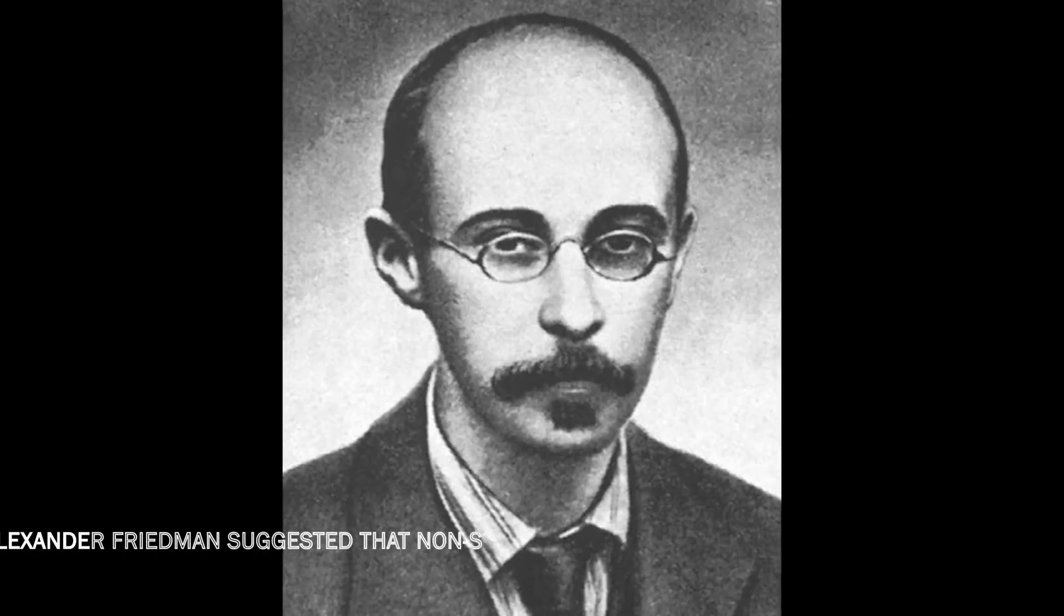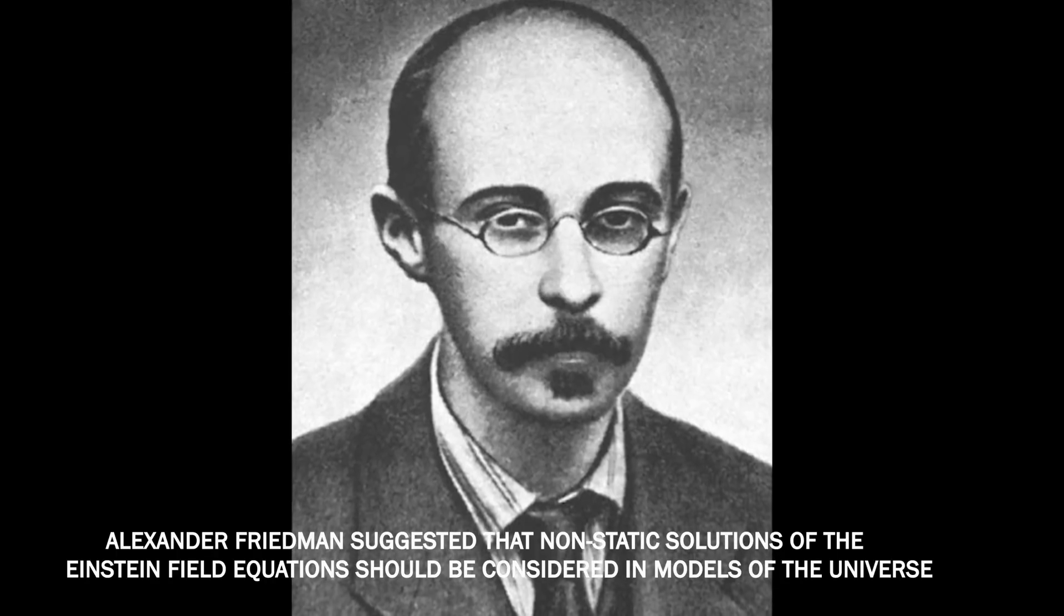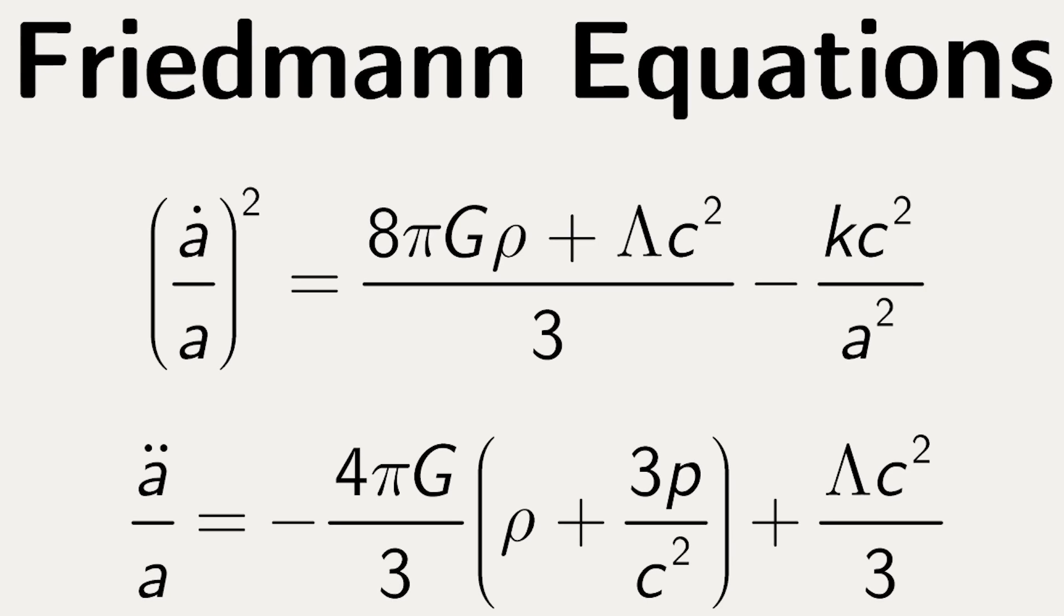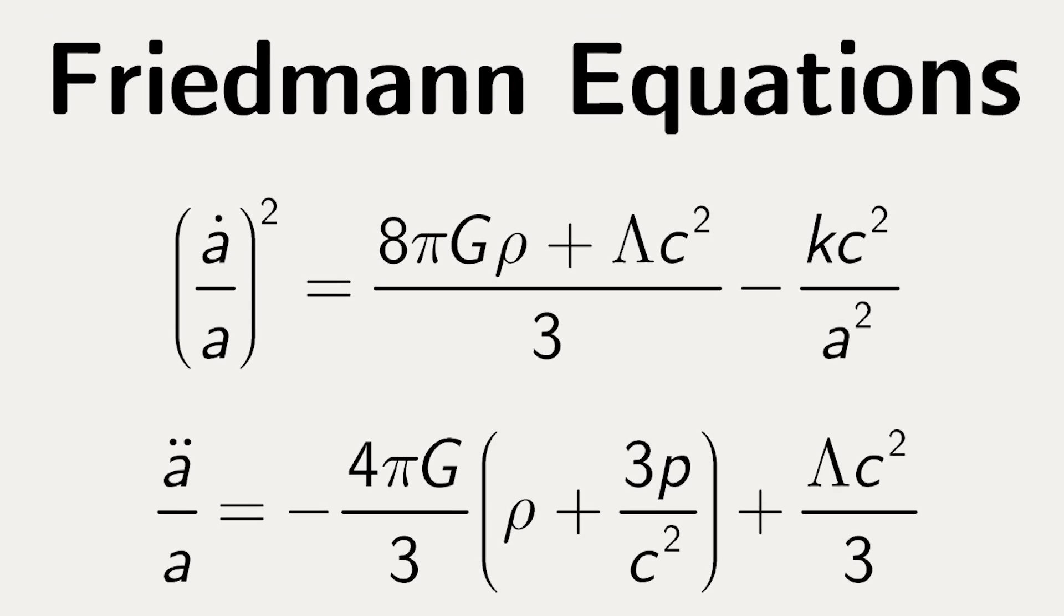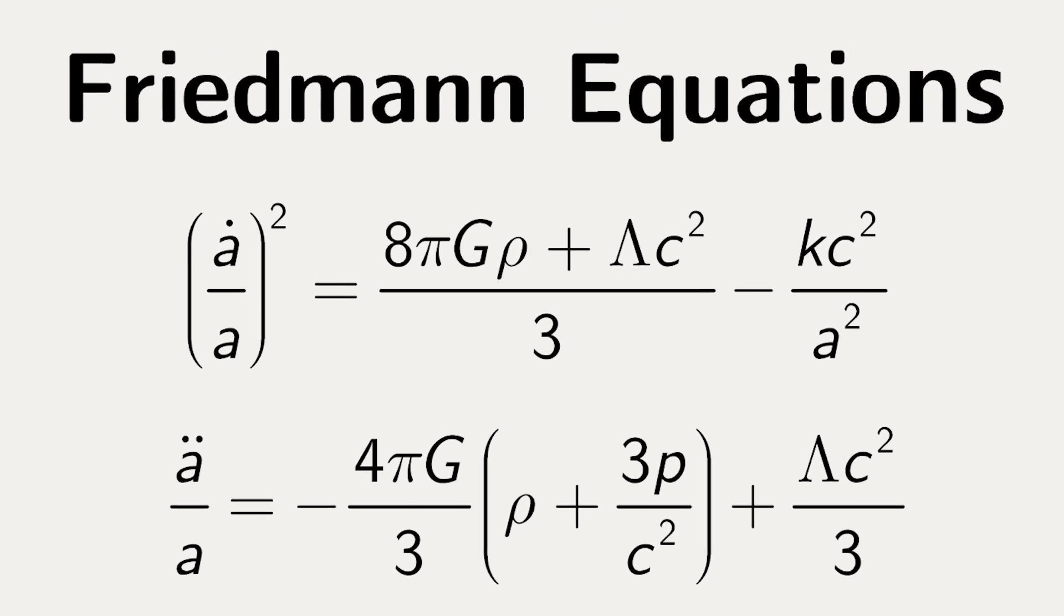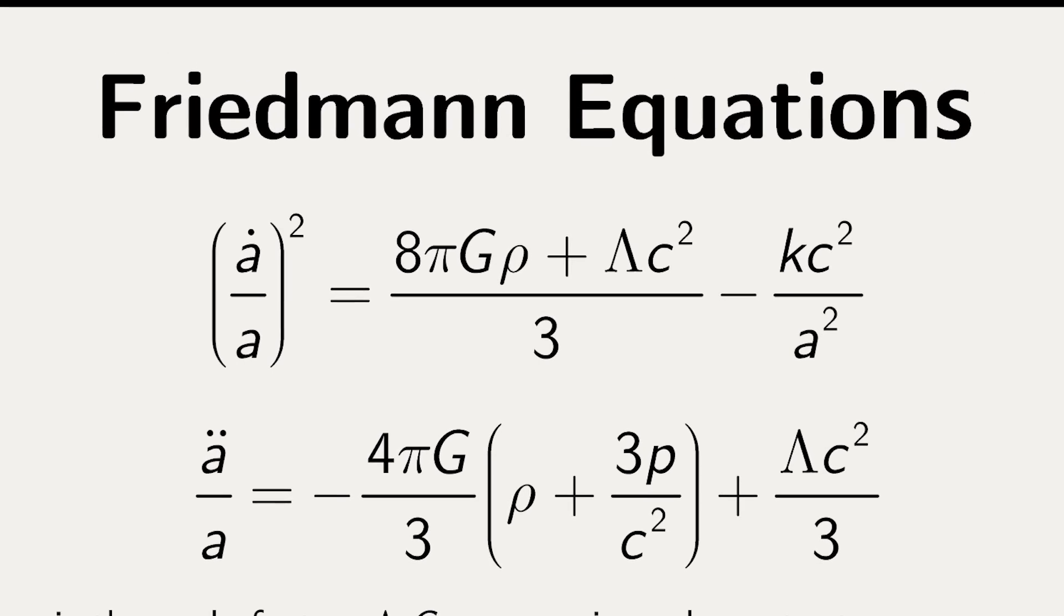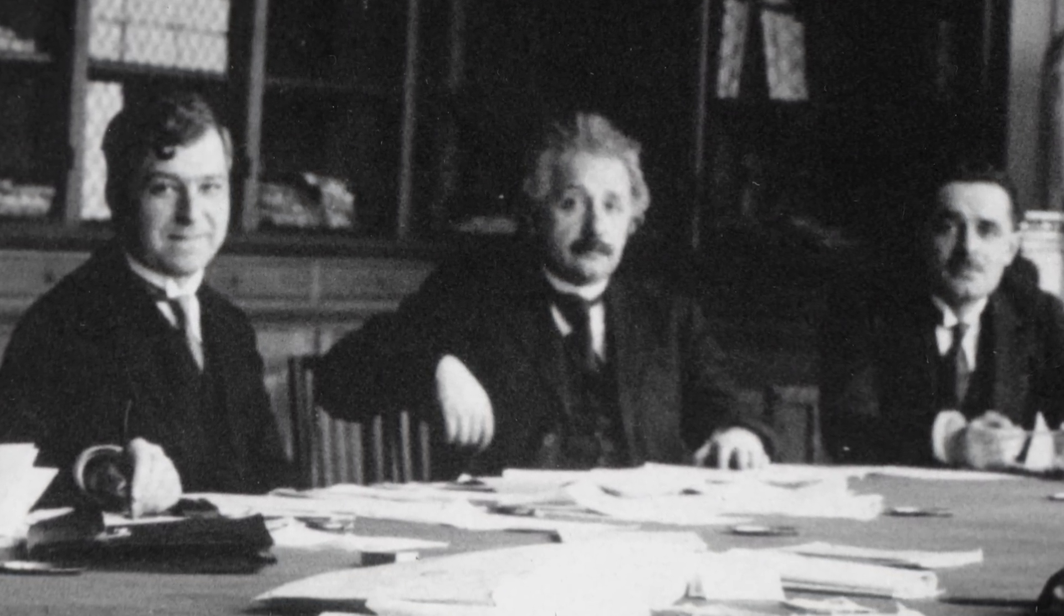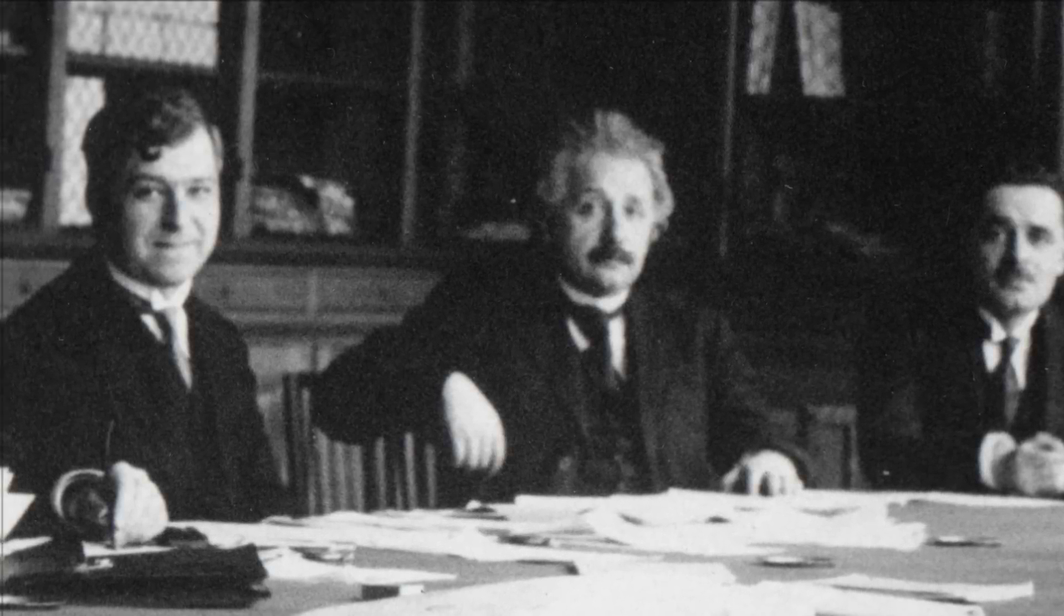However, it didn't take long for Einstein to be proved wrong. In 1922, the young Russian physicist Alexander Friedman suggested that non-static solutions of the Einstein field equations should be considered in models of the universe. Starting from the modified field equations, Friedman derived two differential equations linking the time evolution of the universe with the density of matter and the cosmological constant. Einstein did not welcome Friedman's contribution. His first reaction was that the Russian had made a mathematical error.